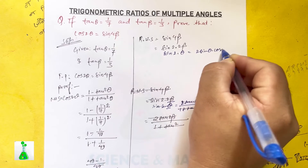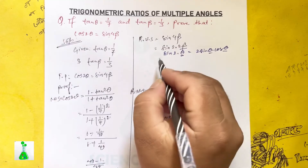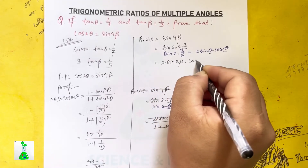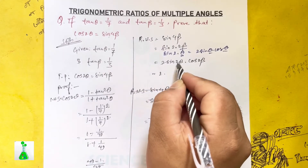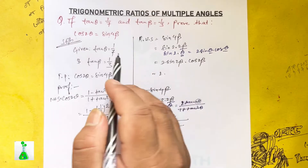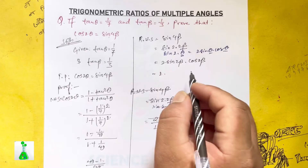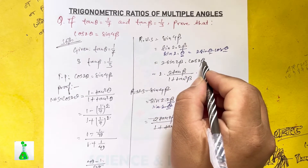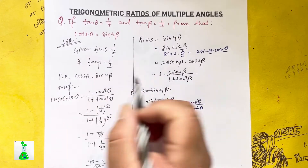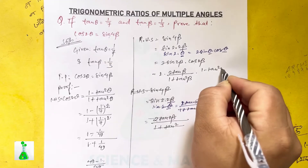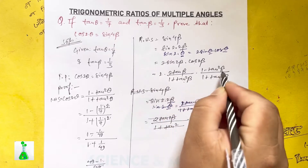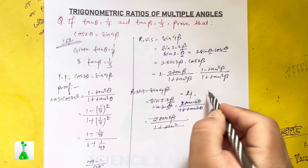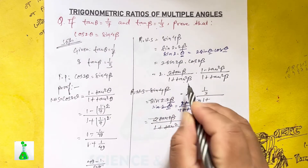Applying the double angle formulas: sin 2 beta equals 2 tan beta divided by 1 plus tan square beta, and cos 2 beta equals 1 minus tan square beta divided by 1 plus tan square beta.